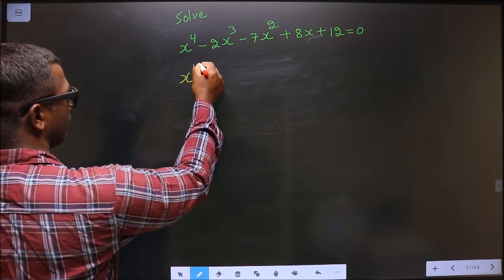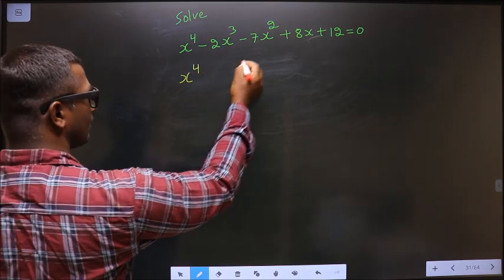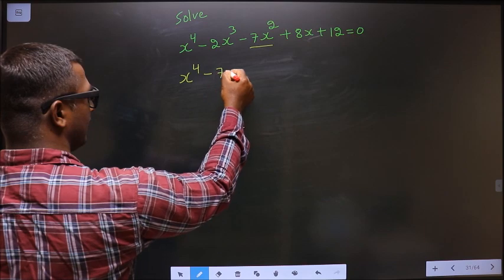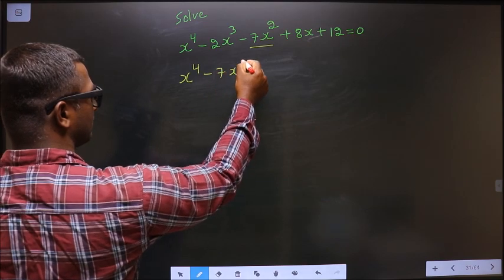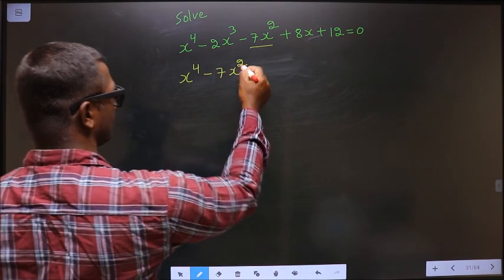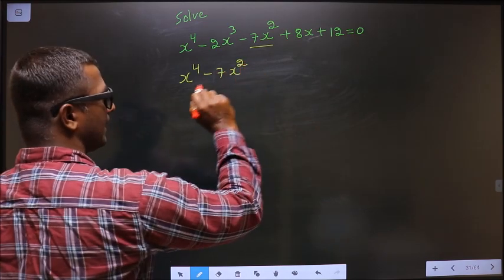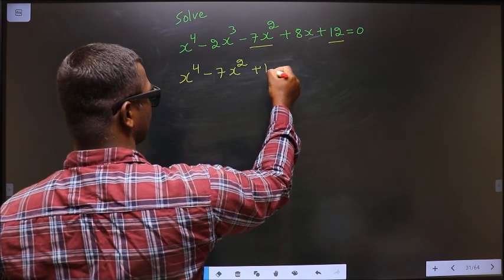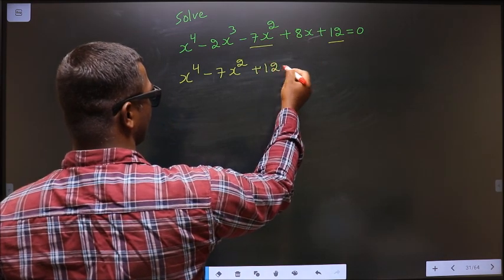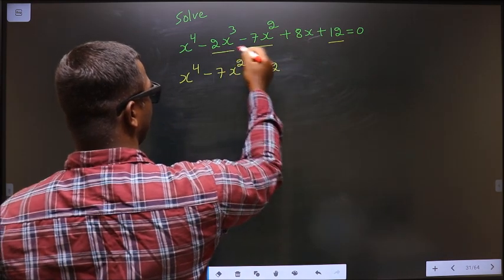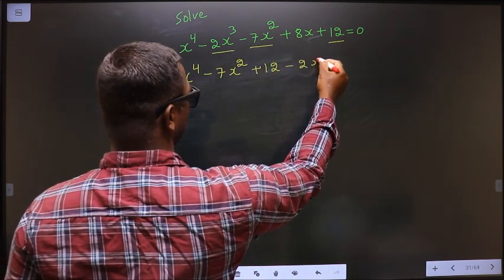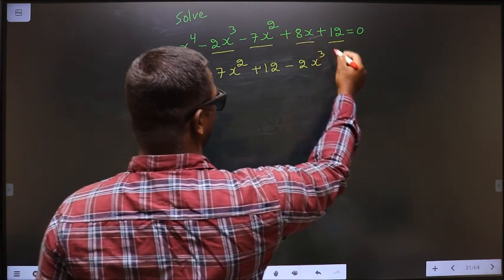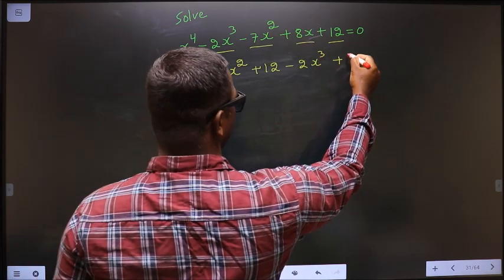I start with x⁴, beside it I write the x² term, beside it I write the constant, and after that I write the x³ term and then the x term.